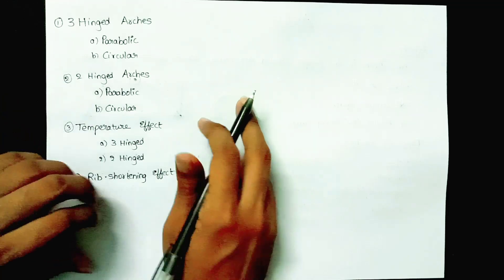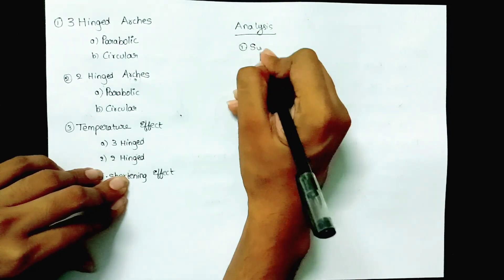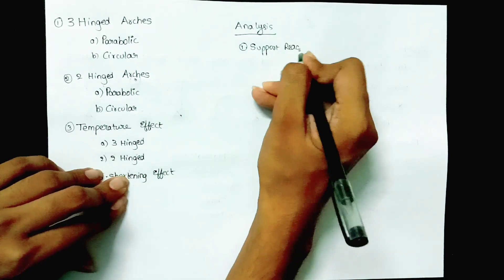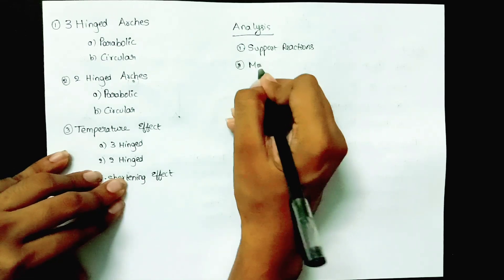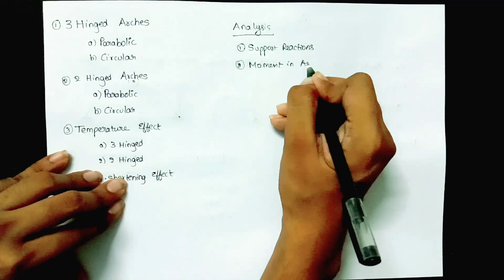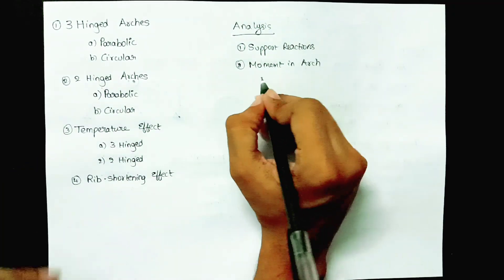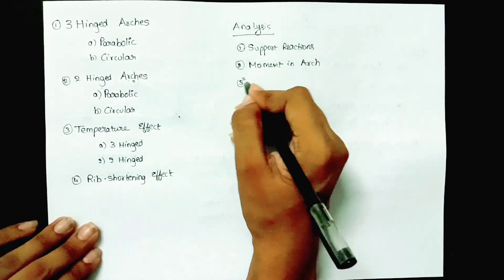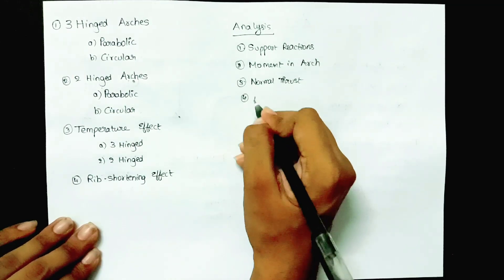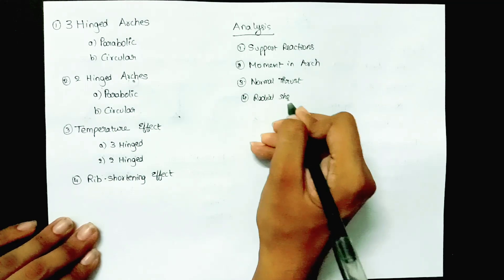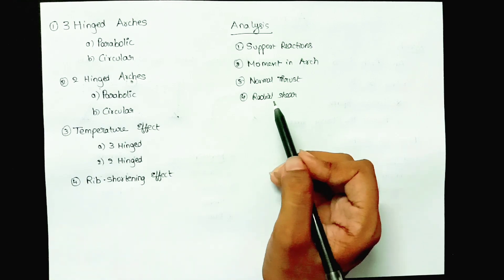By the term analysis, we are going to find out: support reactions at the supports (which are hinged supports); moments in arches at various points; normal thrust; and radial shear. These are the four parameters we are going to find out in the analysis of arches.